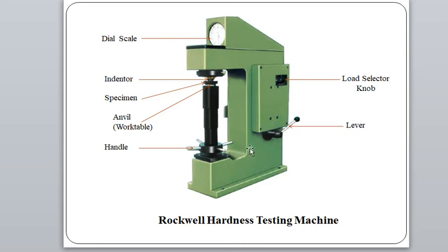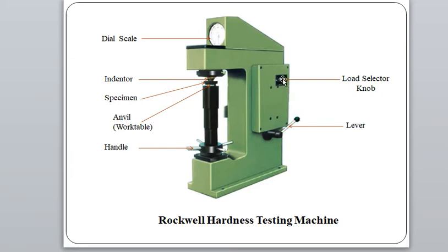This is the three-dimensional diagrammatic representation of the actual machine setup in our laboratory. Key components include: the anvil or work table for the specimen; the indenter; the dial scale with B and C scale readings; the load selector knob to adjust major load (60 kg, 100 kg, or 150 kg); and the lever to apply and release the load.